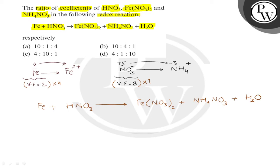Now, we need to place 4 with iron. So the same will have to be placed with ferrous nitrate also.